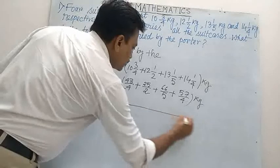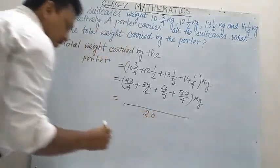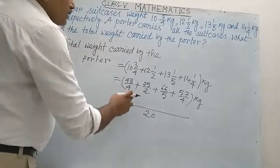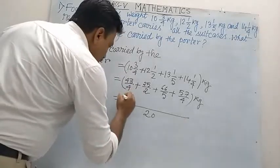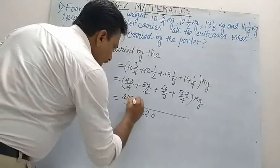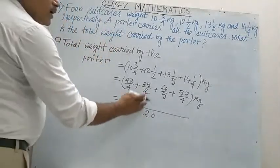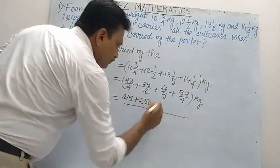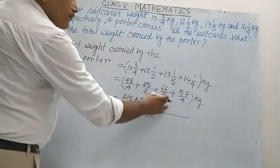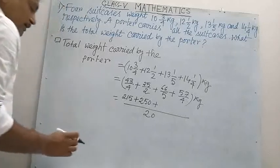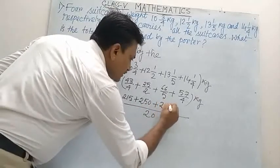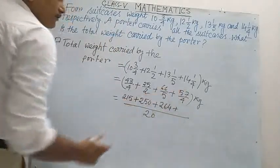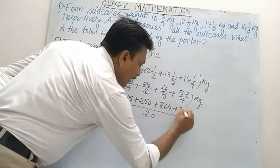Now find the LCM. The LCM of 4, 2, 5, and 4 is 20. So: 4 fives are 20, 5 into 43 is 215. 10 into 25 is 250. 4 into 66 is 264. 5 into 57 is 285 kg.